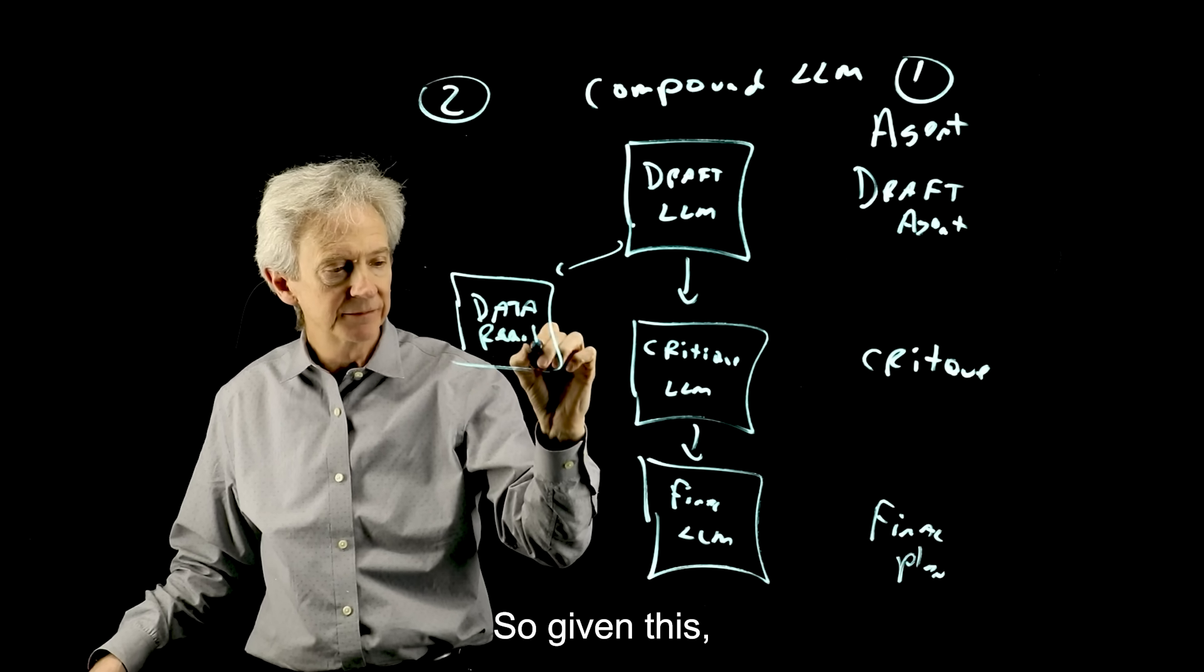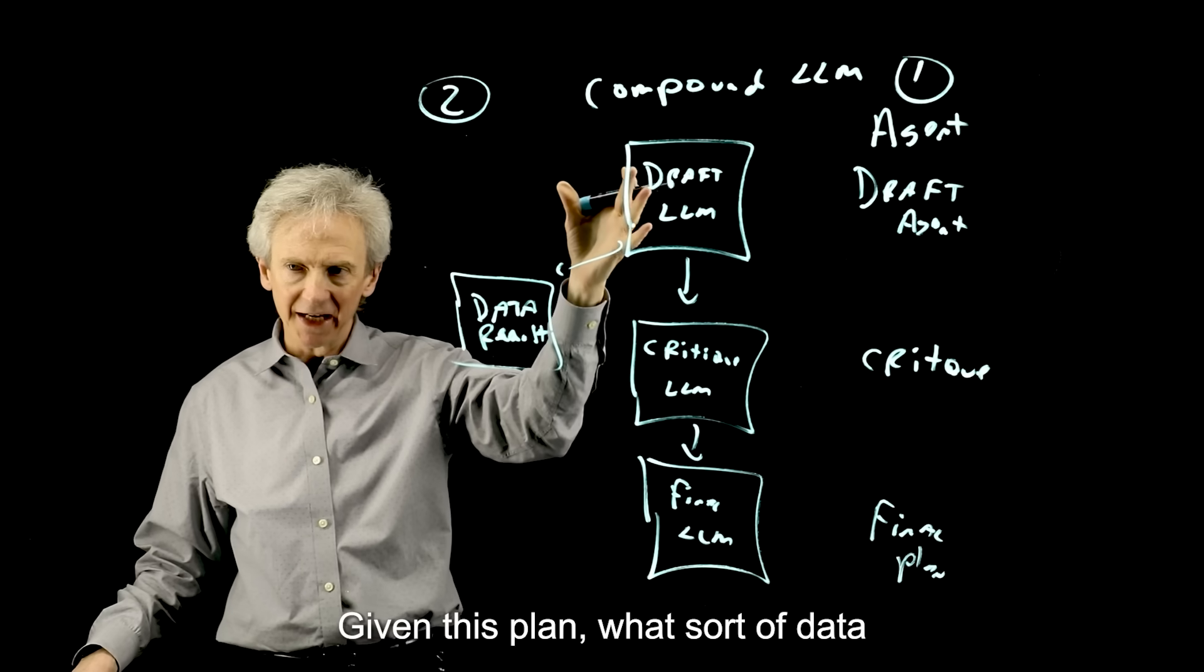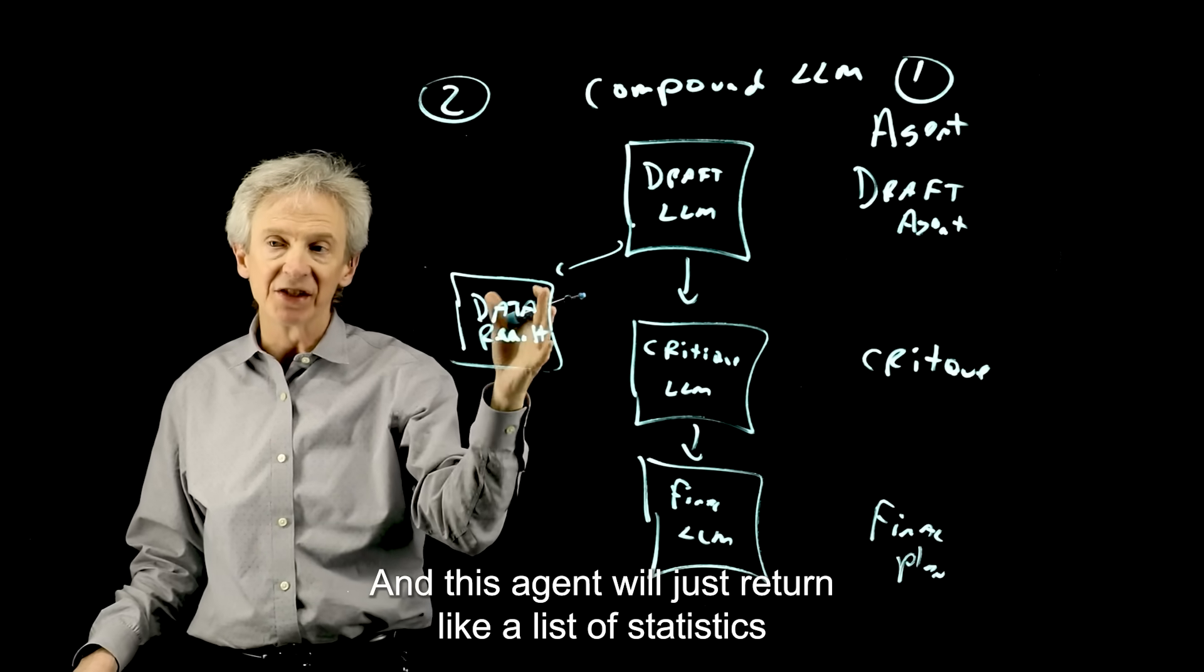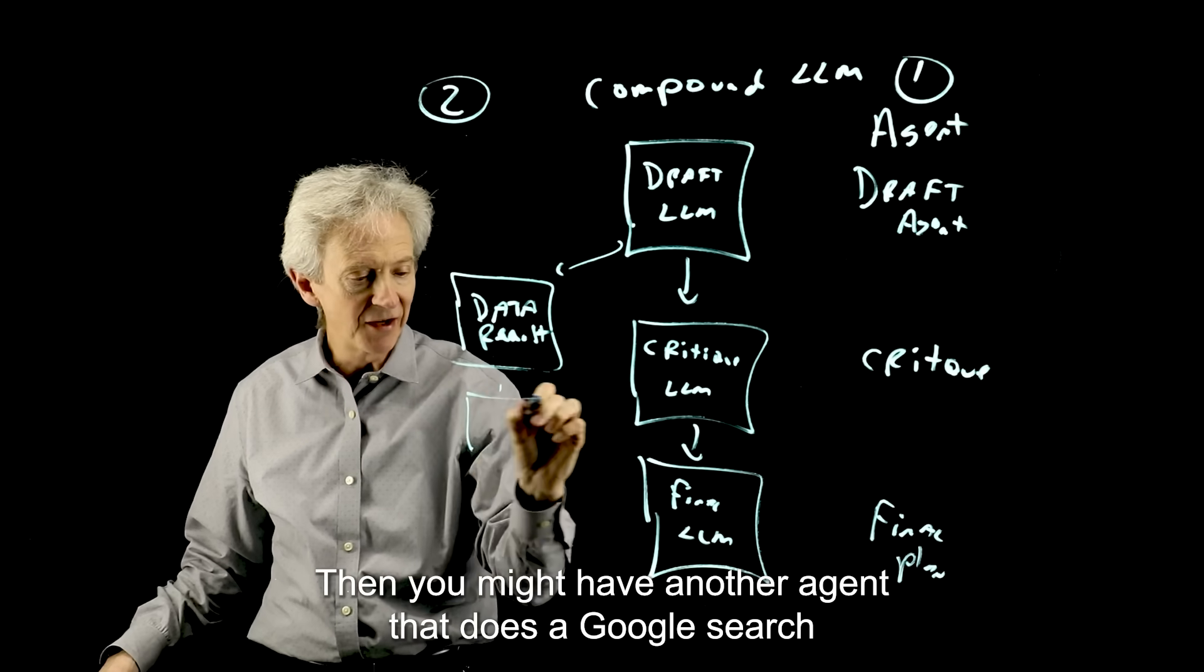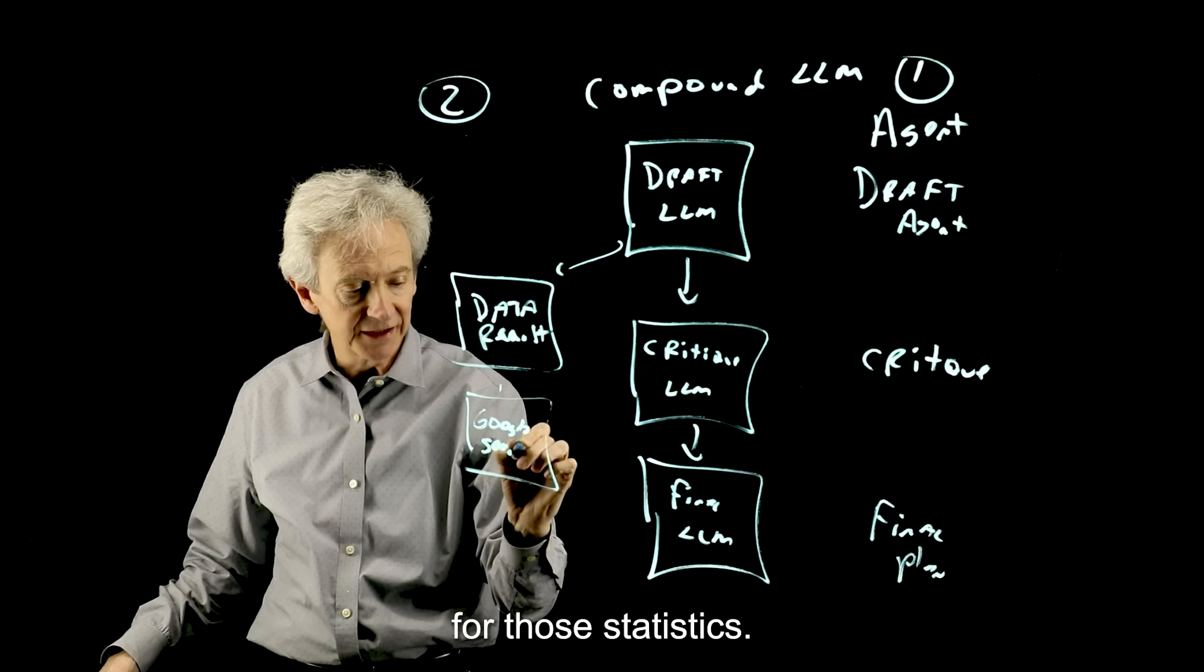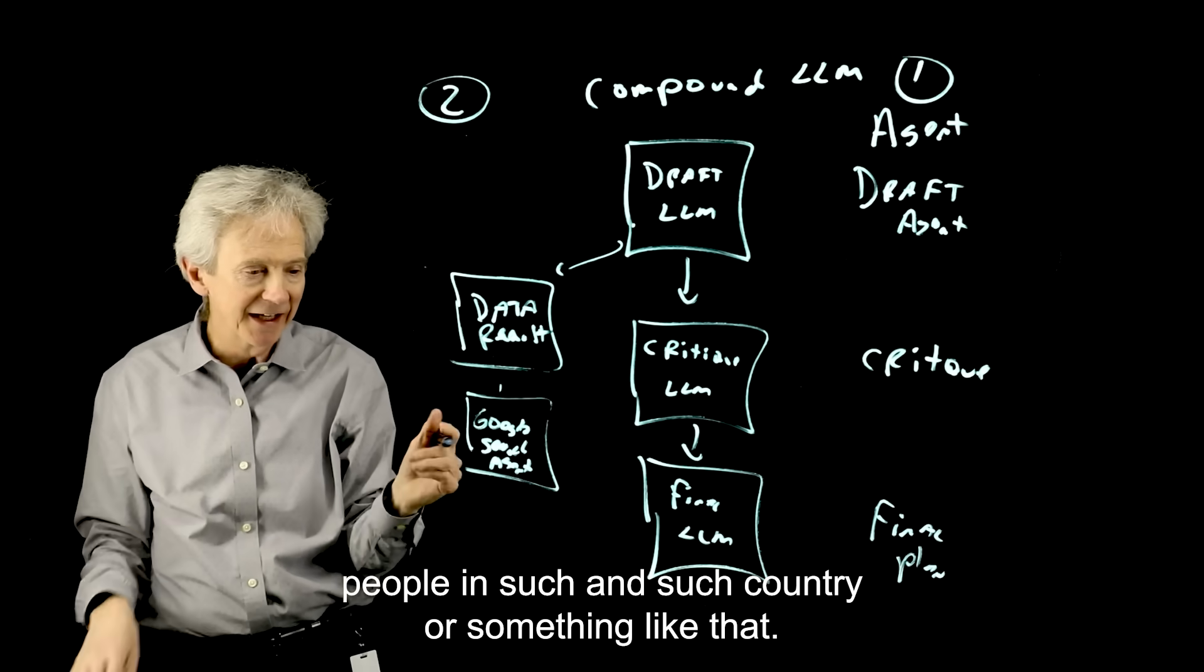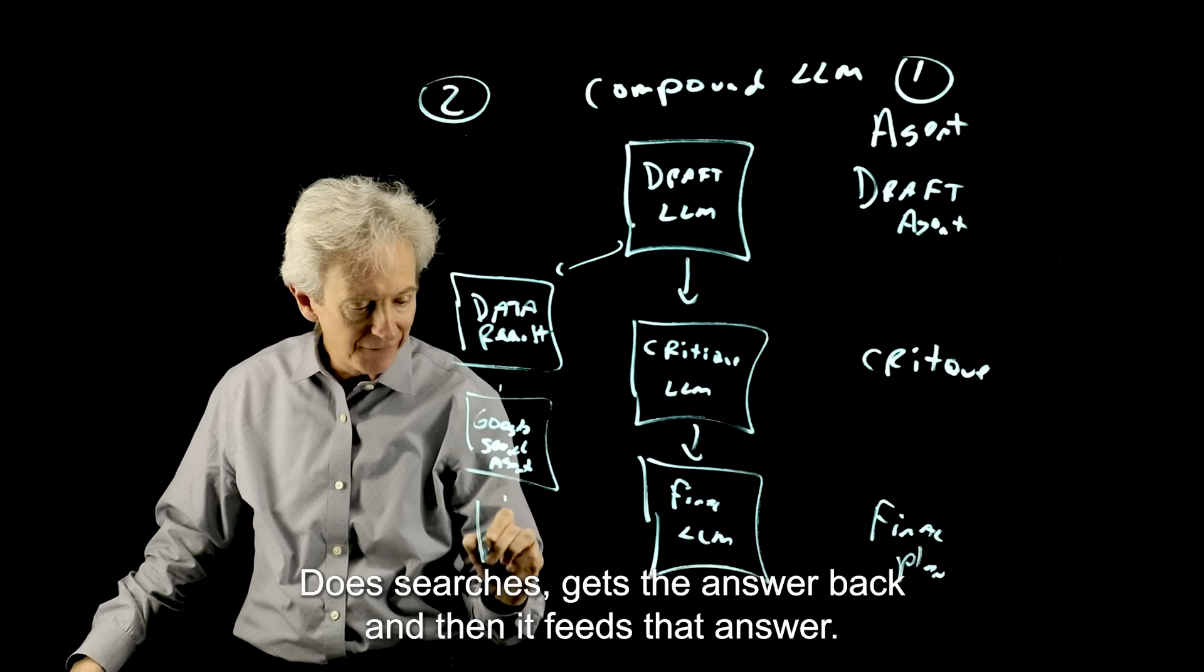But I could also add in some steps, like I could add a data request agent. Given this plan, what sort of data would be useful to support the plan or to support this presentation? And this agent will just return like a list of statistics that would be nice. Then you might have another agent that does a Google search for those statistics. Takes the string value, I don't know, average age of people in such and such country or something like that. Does searches, gets the answer back.